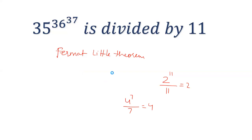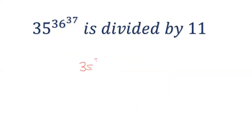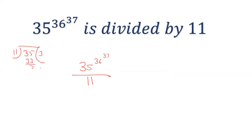Now, how do we apply it here? The challenge is that the power itself has a power. First, divide 35 by 11: 11 times 3 is 33, so the remainder is 2. So this question becomes: 2 to the power (36 to the power 37), divided by 11.